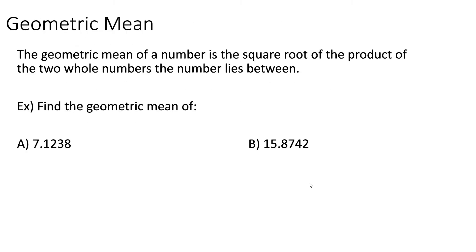Before we can talk about how to use Hill-Huntington's method, we first need to talk about what something called the geometric mean is. The geometric mean of a number is the square root of the product of the two whole numbers that the number lies between.